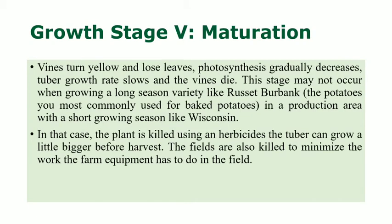The fifth stage is maturation, where the vine turns yellow, loses leaves, and photosynthesis gradually decreases. Tuber growth rate slows down and the vines die. In long-season varieties like Russet Burbank — commonly used for bagged purposes — the plant is killed using an herbicide so the tuber can grow a little bigger before harvest. Fields are also killed to minimize the work farm equipment has to do.